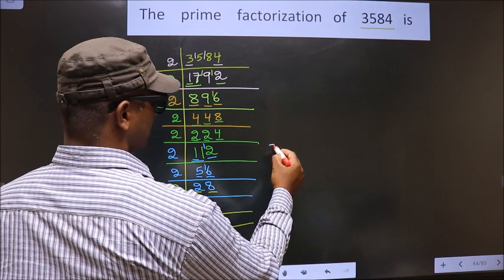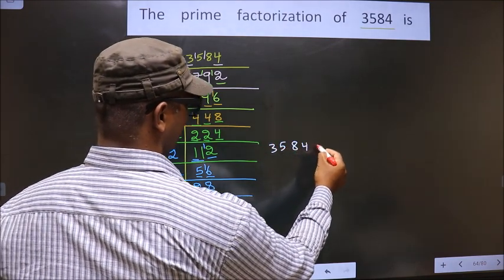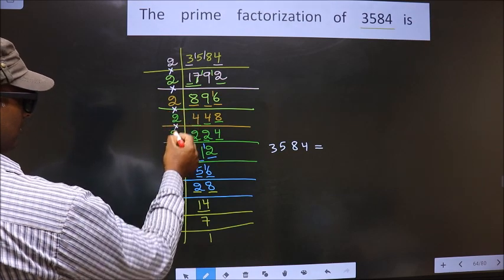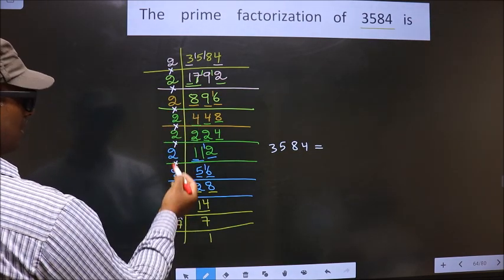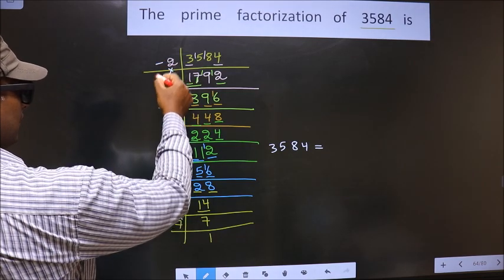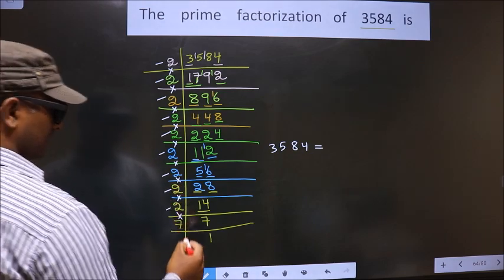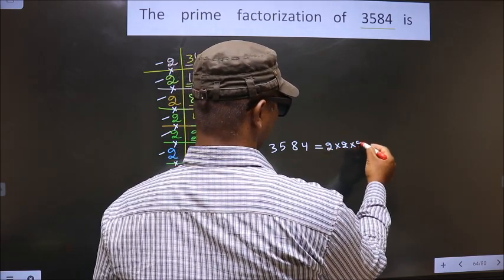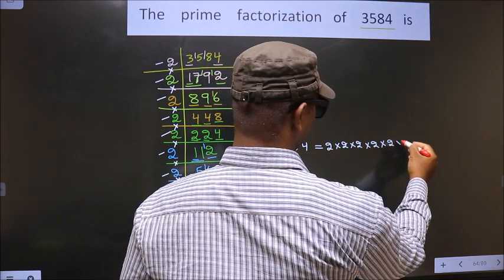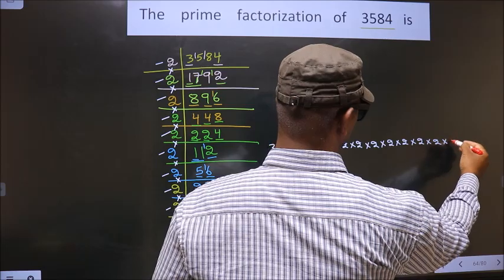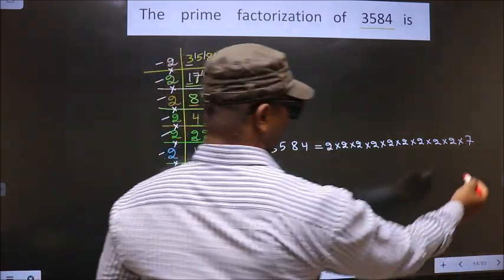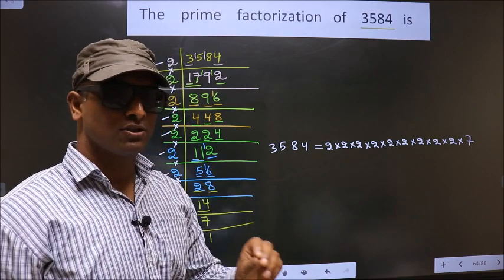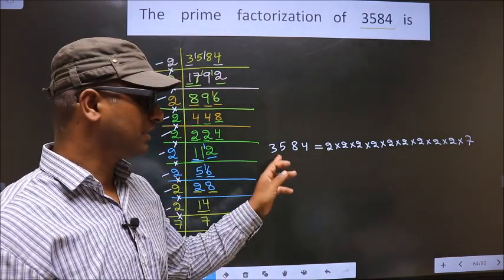Now, the prime factorization of 3584 is equal to the product of these numbers. How many times do we have 2? 1, 2, 3, 4, 5, 6, 7, 8, 9. So, 2 × 2 × 2 × 2 × 2 × 2 × 2 × 2 × 2, and finally 7. So this is the prime factorization of 3584. This is also called the product of prime numbers of 3584.